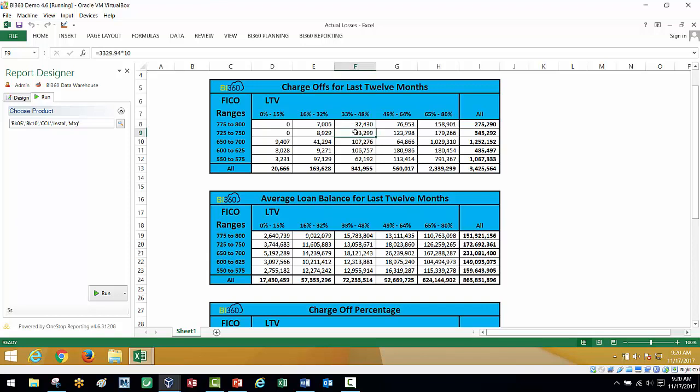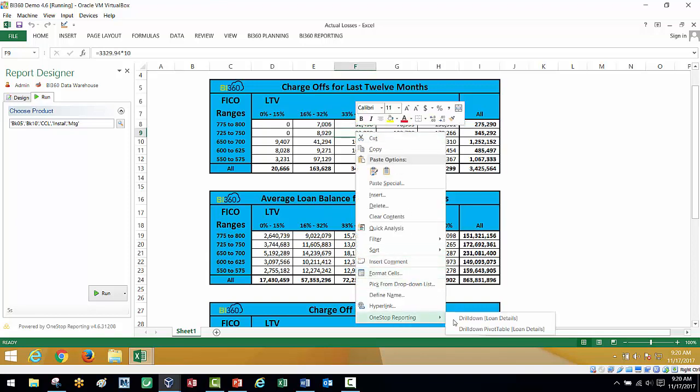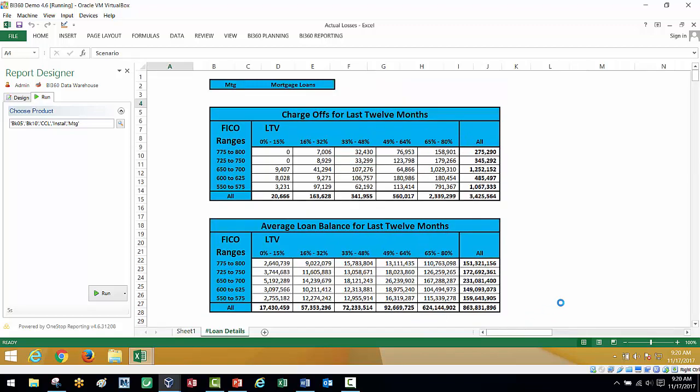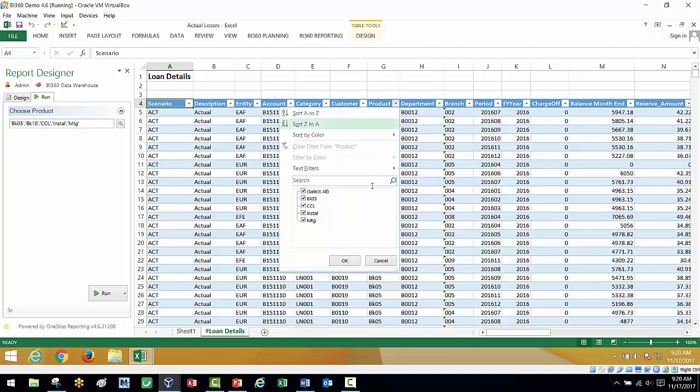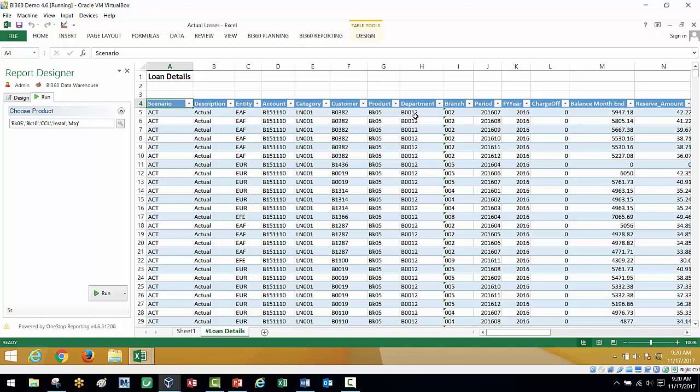Another nice thing about this BI360 tool is every cell is drillable. So if I want to go in and really interrogate the data, and look at my product code, these are my various product codes. You can do all sorts of what-if analysis. So again, the drill down is really, really helpful.